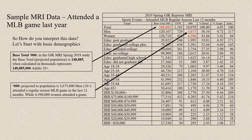I'm going to show you how to read this data so that you know how to interpret it and use it for other purposes. The very first thing to look at is what's called the base total. In this study, the base total predicted population is 248,885. That is the number of people that MRI has calculated as 18 years and older in the U.S. population. That number will appear in the first column.